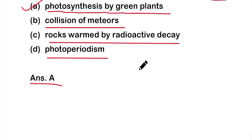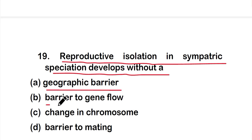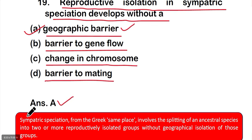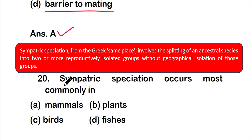Question 19: Reproductive isolation in sympatric speciation develops without a — option A: geographic barrier, option B: barrier to gene flow, option C: change in chromosome, or option D: barrier to mating. The correct answer is option A — geographic barrier. Sympatric speciation, from the Greek 'same place,' involves the splitting of an ancestral species into two or more reproductively isolated groups without geographic isolation of those groups.